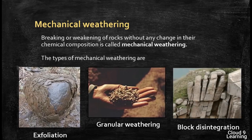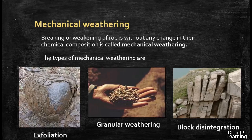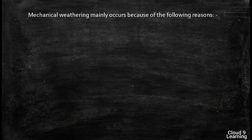The third type by which mechanical weathering takes place is block disintegration. In block disintegration, the rocks are broken down because of differences in temperature and water. Because of the change in temperature, the minerals in the rocks expand and contract, leading to widening of joints or formation of cracks, as shown in this picture. Water accumulates in such joints and big blocks of rocks separate from each other in the form of longitudinal sections.